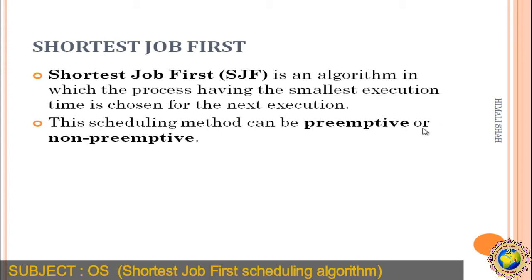This scheduling method can be preemptive or non-preemptive. The preemptive scheduling algorithm means the higher priority process comes first. In the non-preemptive scheduling algorithm, a process voluntarily comes out or terminates, and then the next process comes for execution. So the non-preemptive version is called Shortest Job First, and the preemptive version is called SRTN — Shortest Remaining Time Next. Today we are going to discuss the non-preemptive SJF, also called Shortest Job Next.